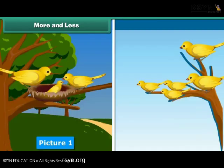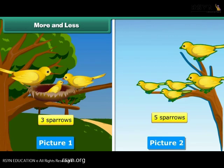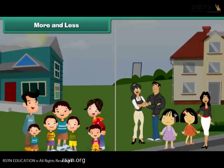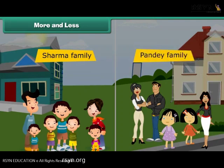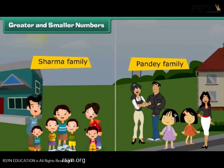More and less. Look at these two pictures. Which of them has more sparrows? The first picture has 3 sparrows and the second picture has 5 sparrows. Therefore, the second picture has more sparrows than the first. The Sharma family has 7 members and the Pandey family has 5 members. Therefore, the Sharma family has more members.